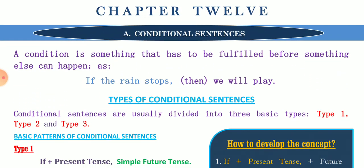This is Chapter 12 of our Total English Language book — conditional sentences. A condition is something that has to be fulfilled before something else can happen, for example: 'If the rain stops, we'll play.' Note that we shouldn't write 'then' in that sentence; I've written it here only for understanding purposes.